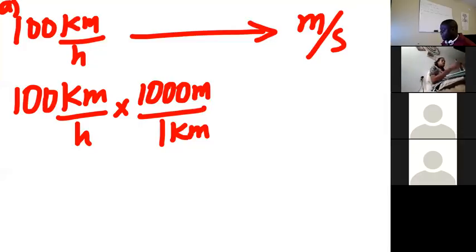If I had written it the other way with kilometers on top and meters below, I would end up with kilometers squared over meters, which would mess up the problem. Next, the conversion factor between hours and seconds. How many seconds are there in one hour? A lot.